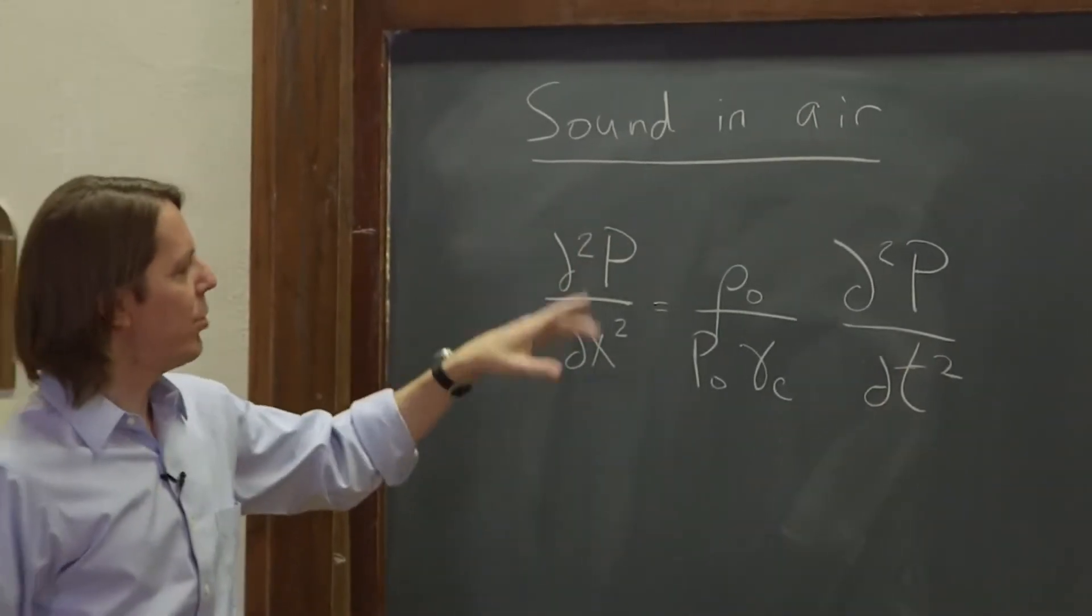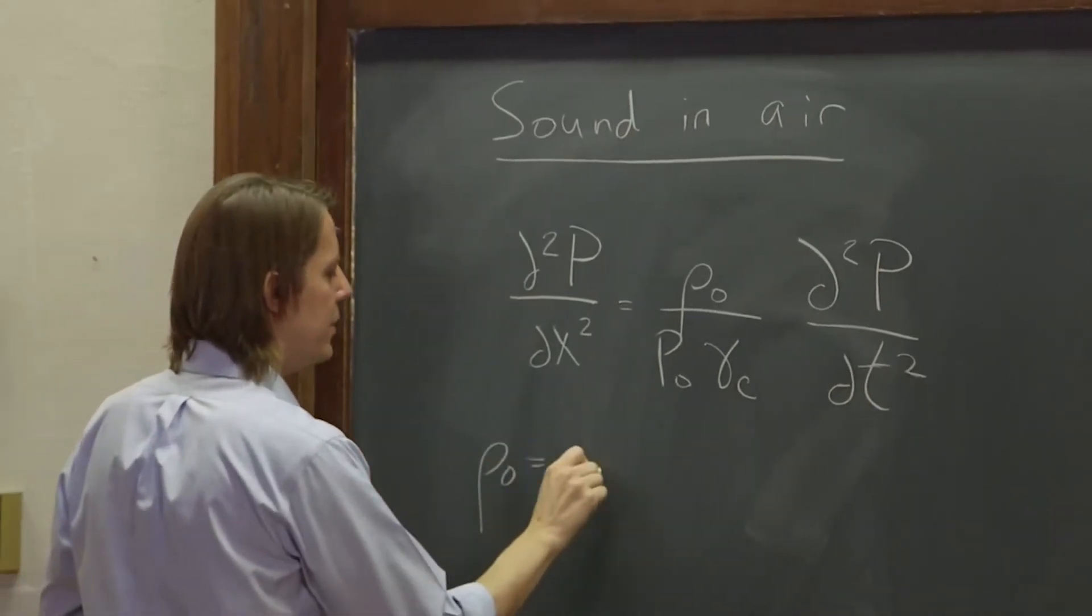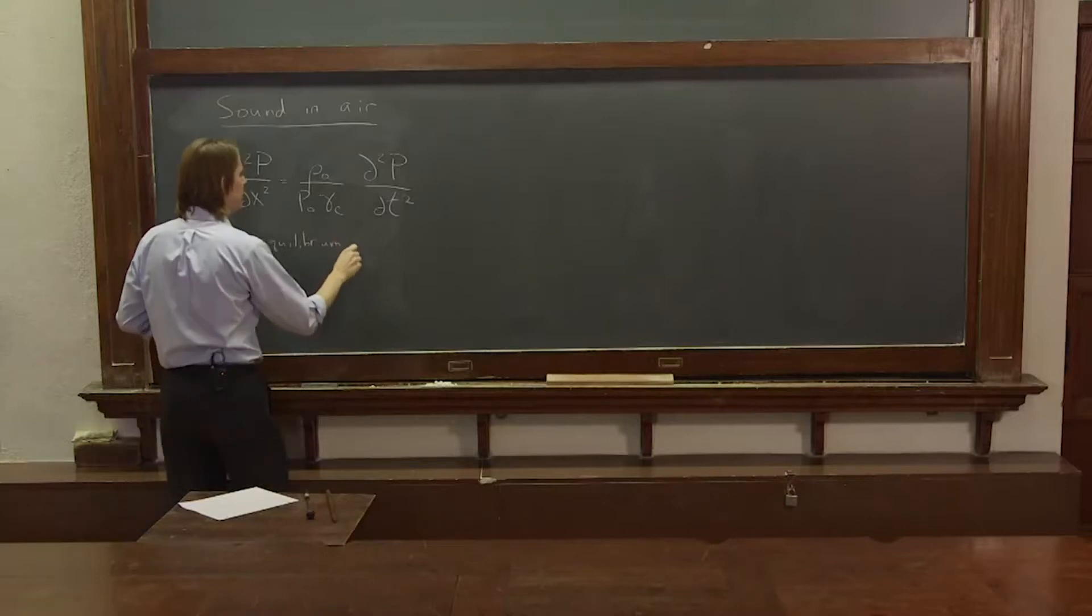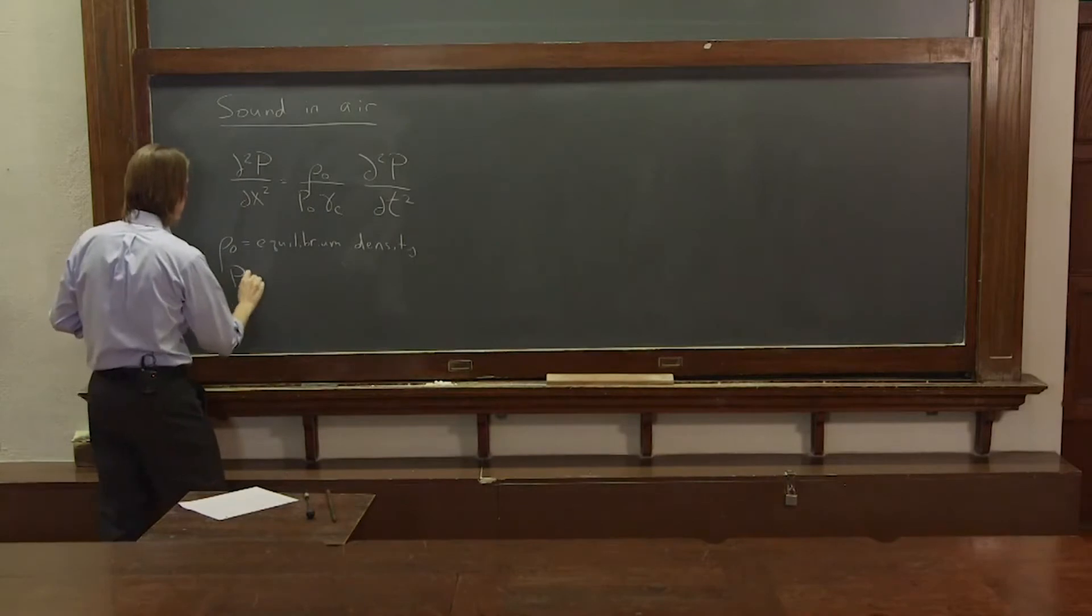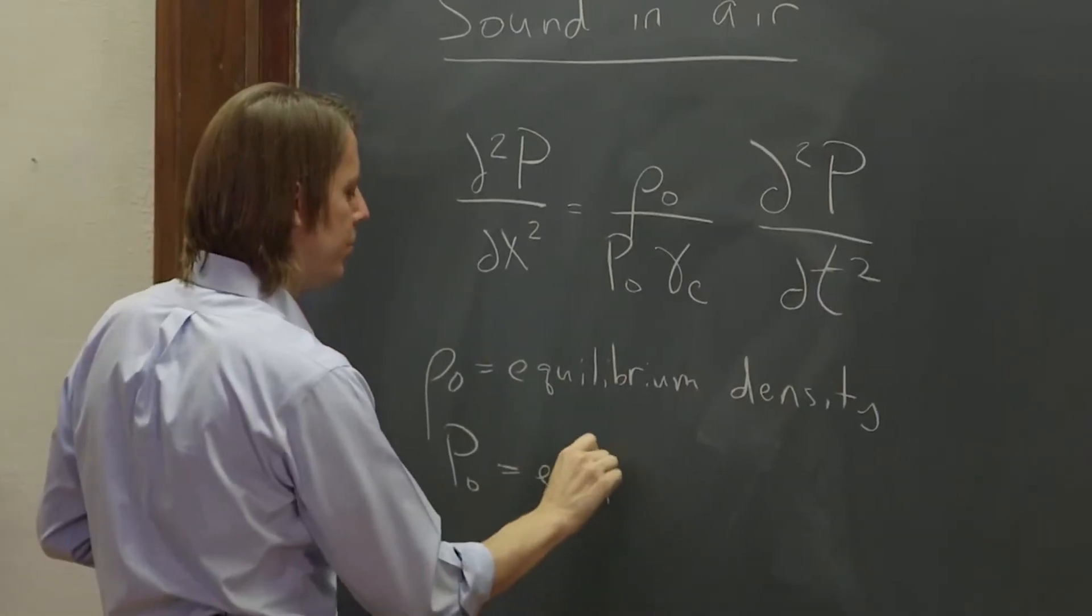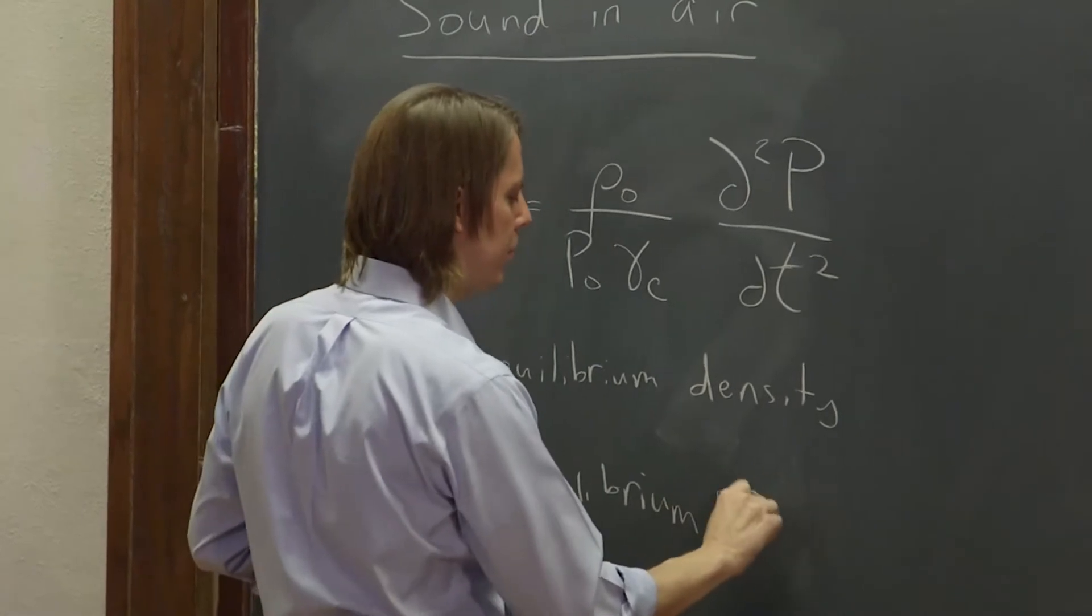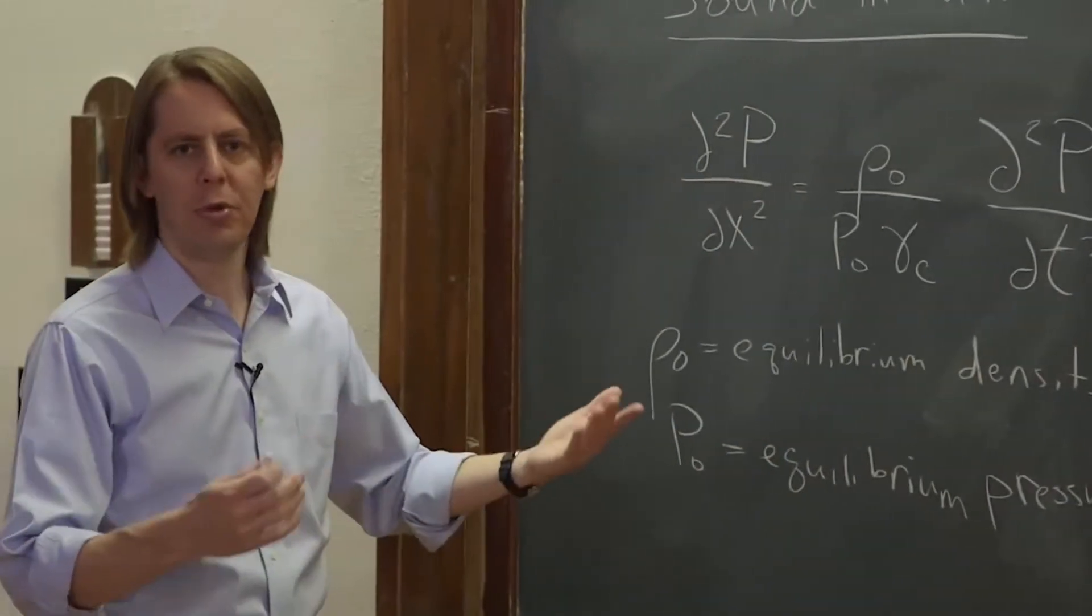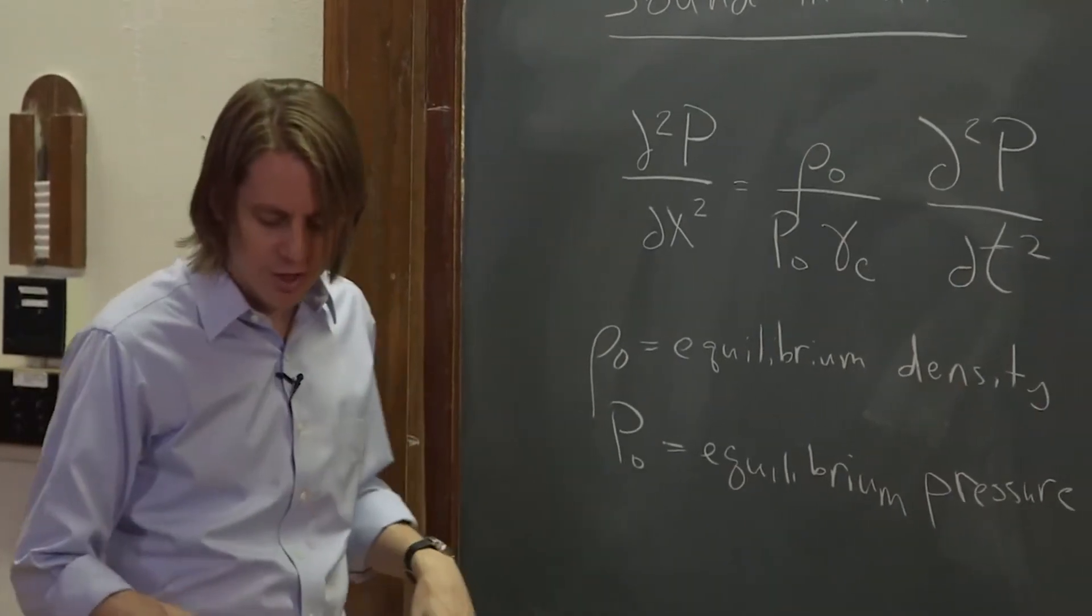So wave equation for the pressure in the air, where ρ₀ is the equilibrium density of the air, and p₀ is the equilibrium pressure. And if you're just at normal one atmosphere, regular temperature, those are just some standard constants that you can put in.